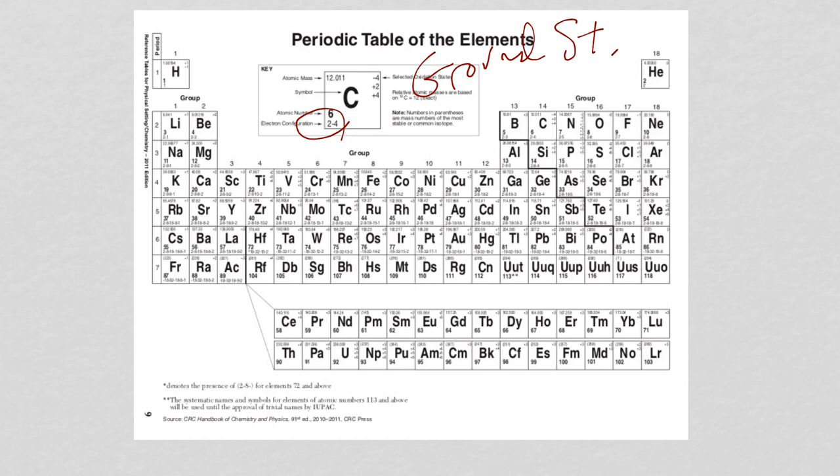So, for example, for carbon, if I wanted to show an excited state, one or more electron would be promoted. So, for example, if I did 2-3-1, now one of the electrons from the second level got promoted into the third. So, that would be an example of an excited state for carbon. So, whether it's excited or ground state, check out the periodic table, and more specifically, the electron configurations here under atomic number.